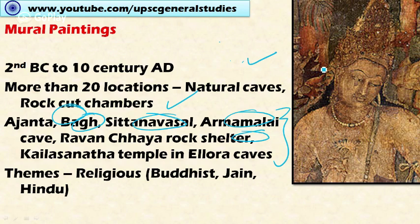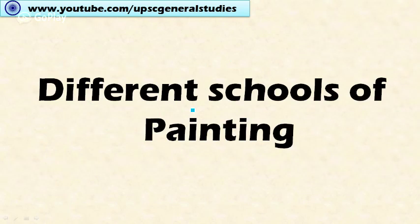The important theme of art in these mural paintings is religious. For example, in the Ajanta Caves, various Buddhist paintings and Jataka paintings are done. The themes include Buddhist, Jainist, and Hindu subjects in these mural paintings.